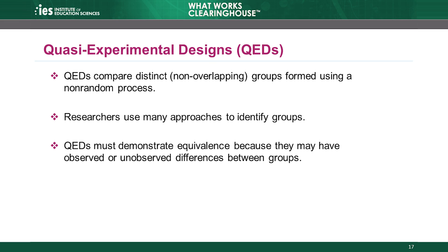Researchers can choose these groups in many ways, which we will discuss next. Because the groups are not the result of random assignment, the QED approach does not provide any guarantee that groups are similar on observed characteristics. For these reasons, studies that use a QED must demonstrate equivalence. Because of this, QEDs cannot receive the WWC's highest rating. In fact, the highest rating a QED can receive is meets WWC group design standards with reservations.